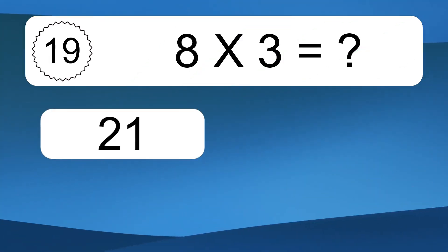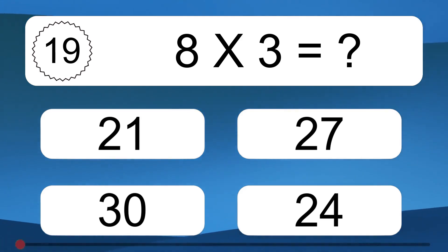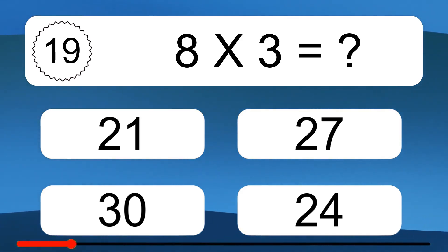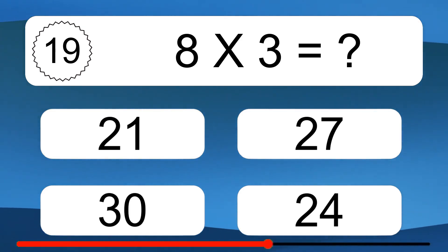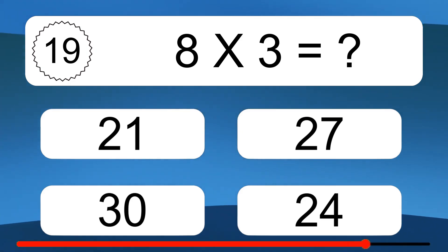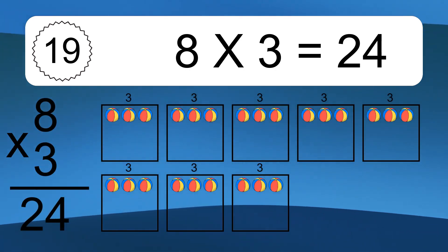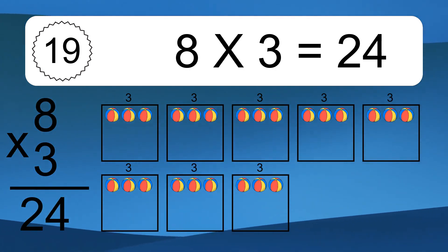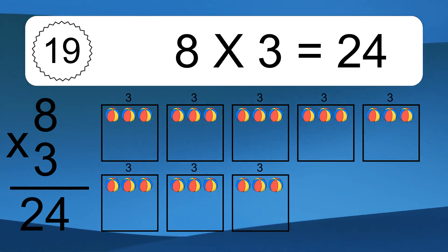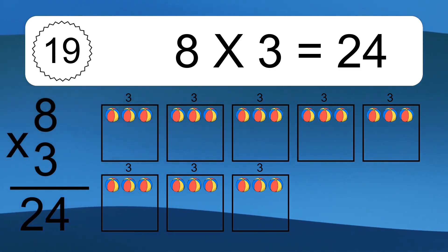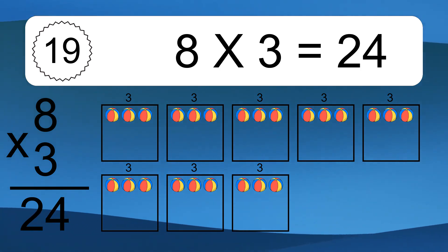8 times 3 equals what? 8 times 3 equals 24. We have 8 boxes, and each box has 3 colorful balls inside. If you count all the balls in all the boxes together, you will have 8 times 3 balls. This equals 24 balls.